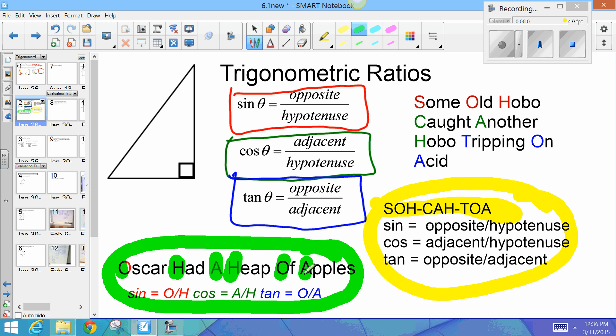Some students don't like Oscar Had a Heap of Apples because it doesn't have cosine and tangent in it. So, they don't know which one references which. And so, last year, a couple years ago, someone told me this one. Some Old Hobo Caught Another Hobo Tripping On Acid. So, sine, the first letter of each of that phrase, tells you both the trig ratios name. So, sine is opposite over hypotenuse. That's Some Old Hobo. Cosine is adjacent over hypotenuse. That's Caught Another Hobo. And tangent is opposite over adjacent. That's Tripping On Acid. Alright. So, three ways to memorize them. You have to memorize them.